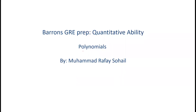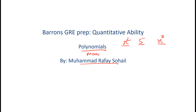Hello everyone, today we'll be doing polynomials. My name is Mohammad. Before starting, we need to understand what we mean by polynomial. So x squared, or five, or x cubed — these are all monomials. Mono means one, so all of them are monomials. x squared is a monomial.